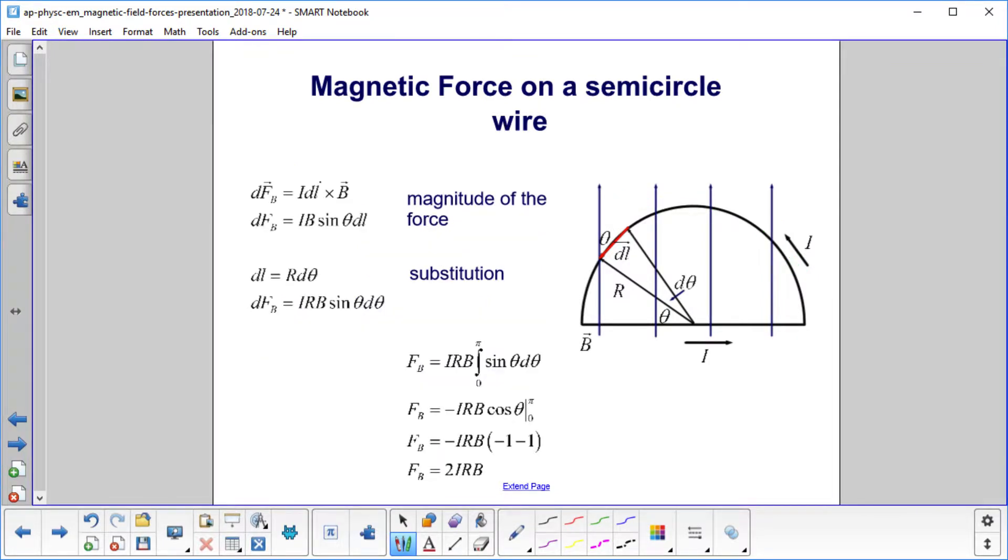Why do we have to take every little piece of the semicircle? Why couldn't we have just multiplied its length, which is pi R, times the strength of the magnetic field? The whole bit is this cross product right here. When we did the straight line, what did you notice about the relationship between the direction of B and the direction of I? It was always 90 degrees.